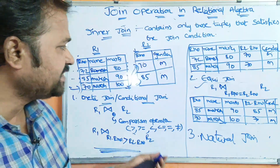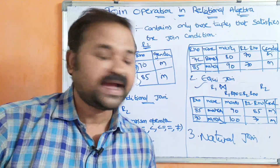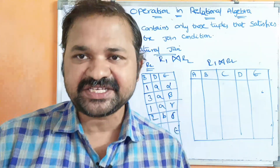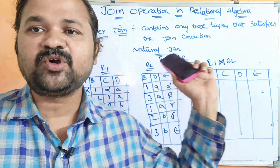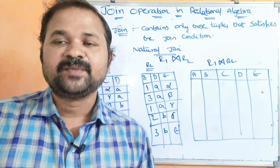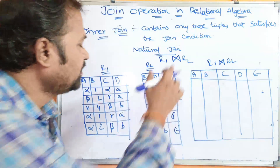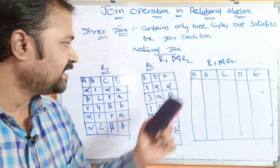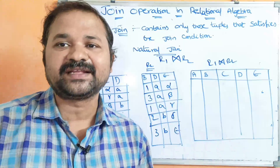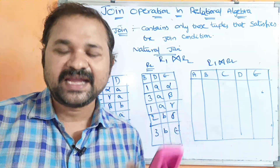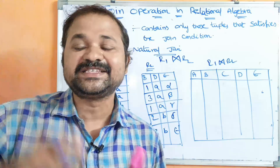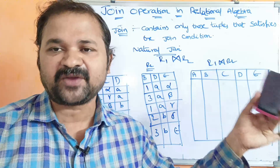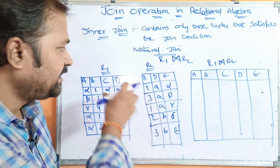Now the second type discussed is actually natural join. Let us see about natural join. It produces tuples based upon the common attributes. Natural join means we have to use the join operator only — there is no need to specify any condition. Whereas in theta join we have to provide a condition using greater than, less than, equal to, etc., and in equi join the condition is the equal-to operator. In natural join, no condition is specified.